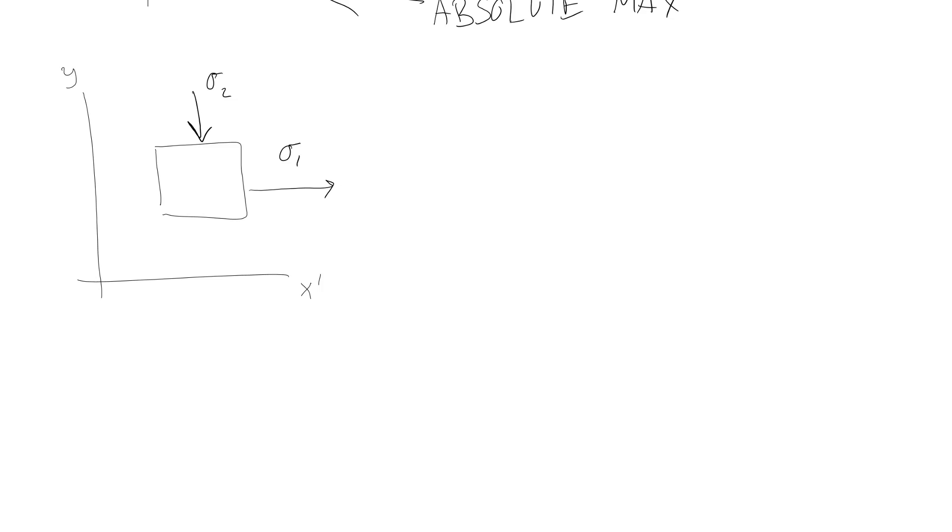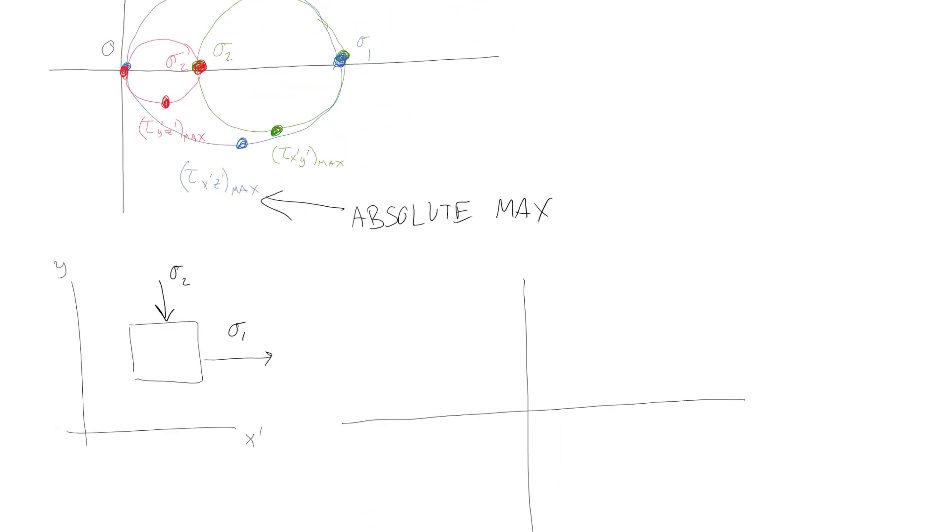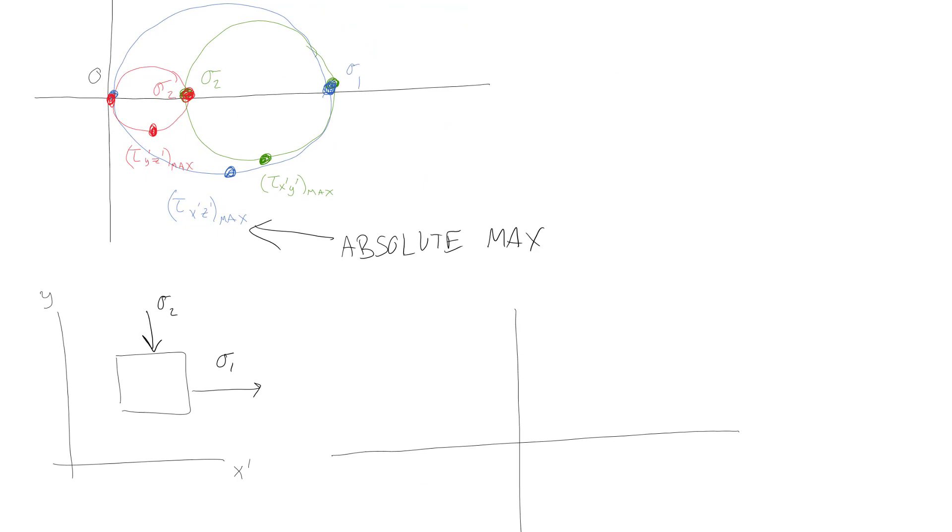But now what's going to happen is whenever you're going to draw in your picture, what you're going to see is the regular Mohr's circle which I think in this previous case was the green one. So I'll try and show them both at the same time. So the green circle which was the original Mohr's circle that we had would have